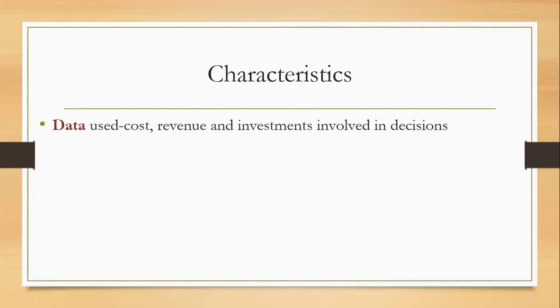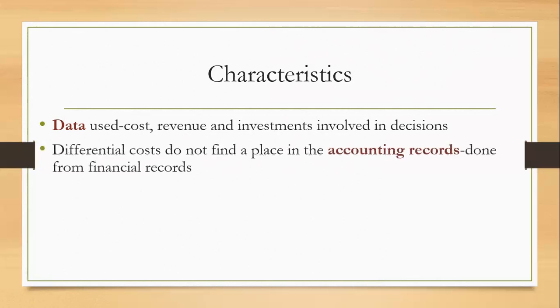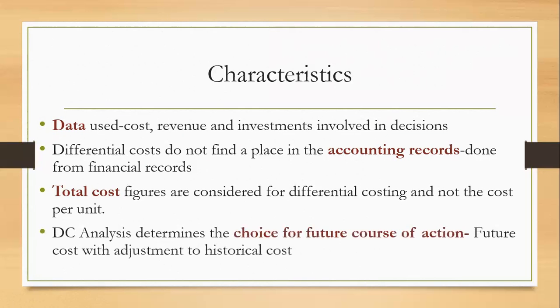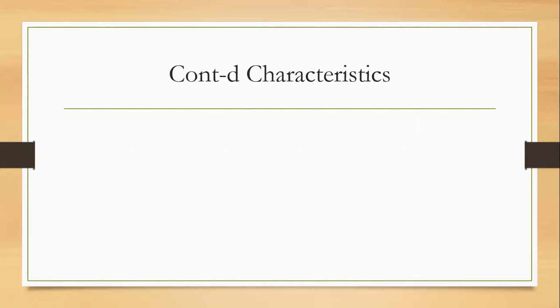Coming to the characteristics of differential costing, the first characteristic is the data used in differential cost analysis. It is the cost, revenue, and the investments involved in the decision would be used in calculation of differential cost. Differential costs do not find a place in the accounting records; it is done from the financial records. Total cost figures are considered for differential costing and not the cost per unit. Differential cost analysis determines the choice for future course of action. The future cost with adjustment to the historical cost is considered.